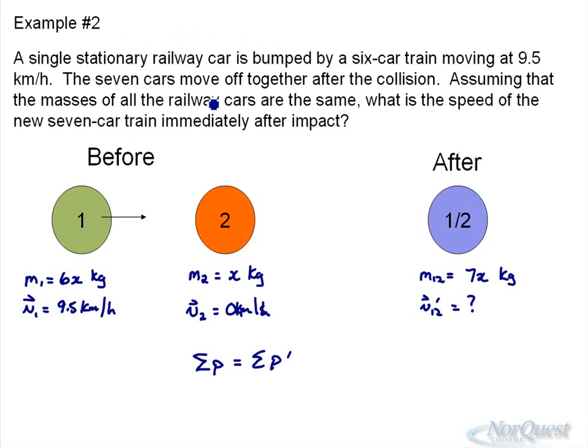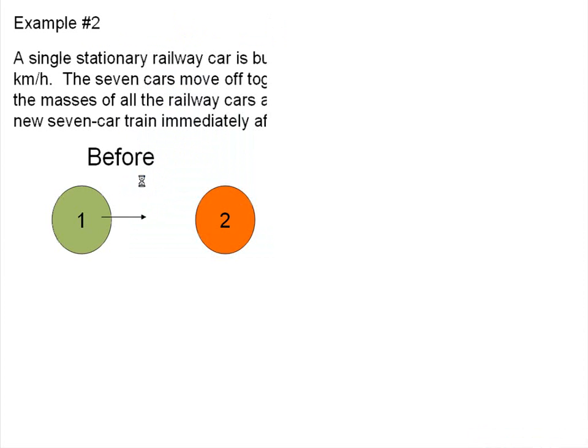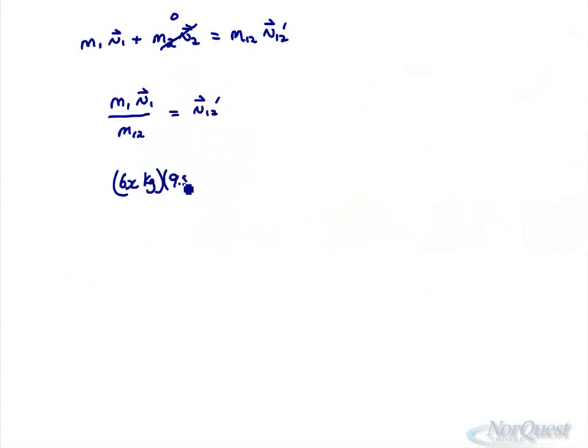So I've got a 6x, which was the mass of object one, times the velocity of object one, which was 9.5 kilometers per hour, divided by the combined mass, 7x kilograms, equals the combined mass velocity after.